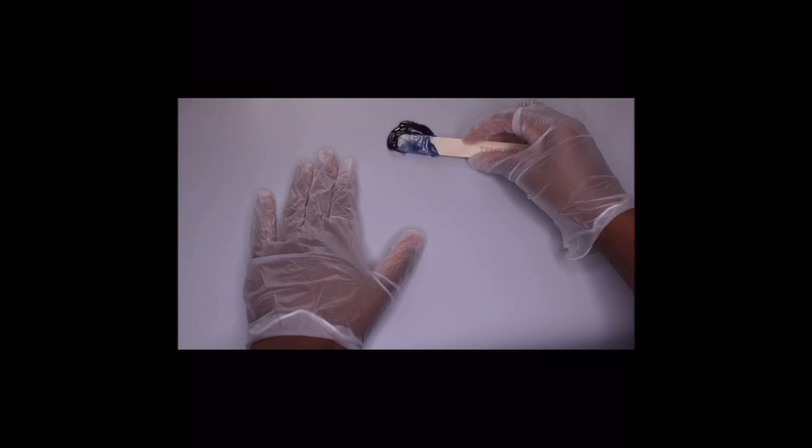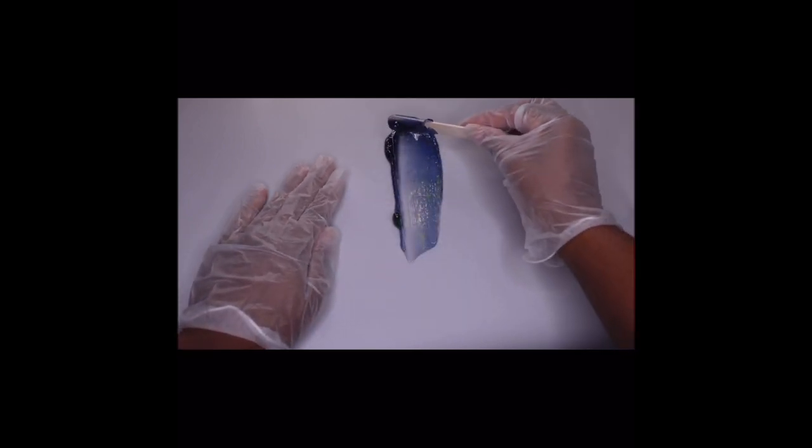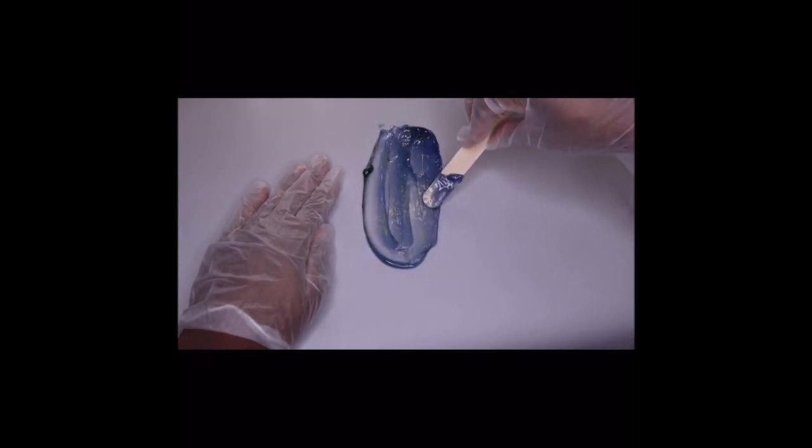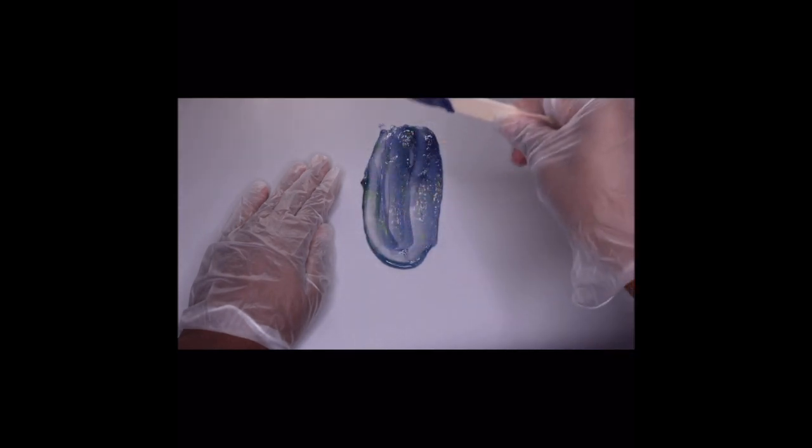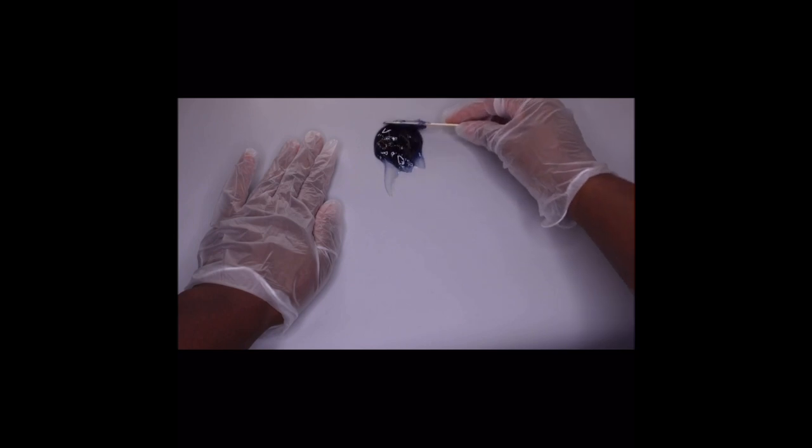Now you're going to release the wax, twirling it and then spread. Okay, let's try it again. You're going to remove that wax stick strip. Release the wax, twirl it. One, two, spread.